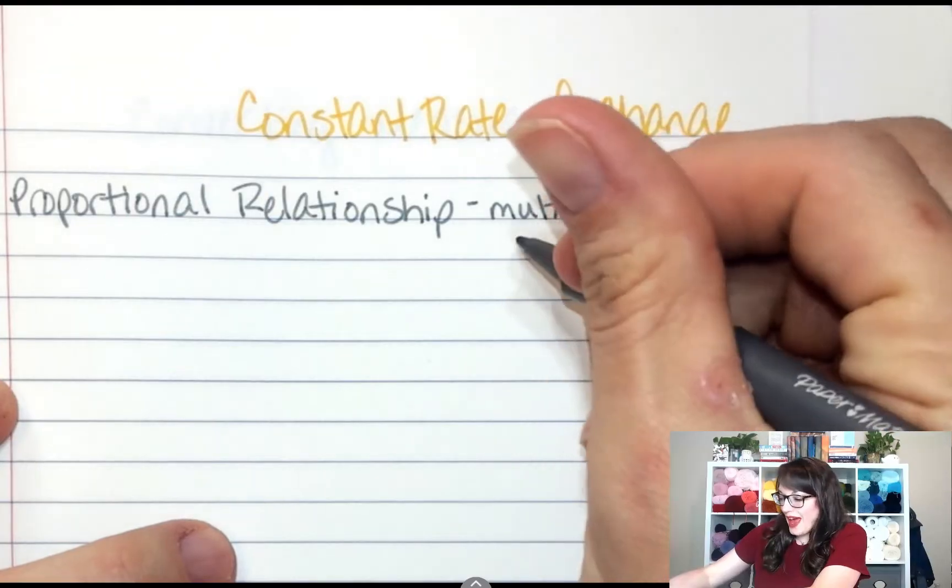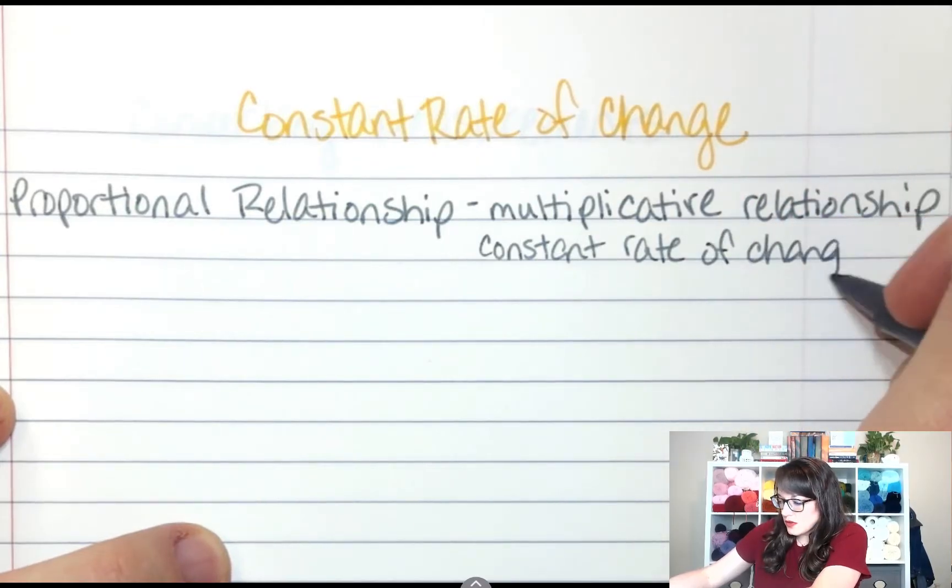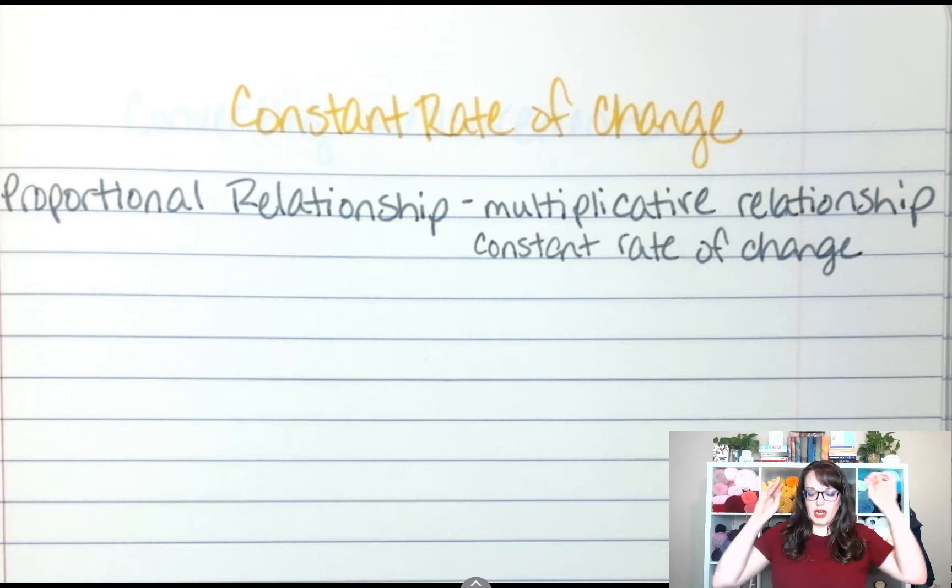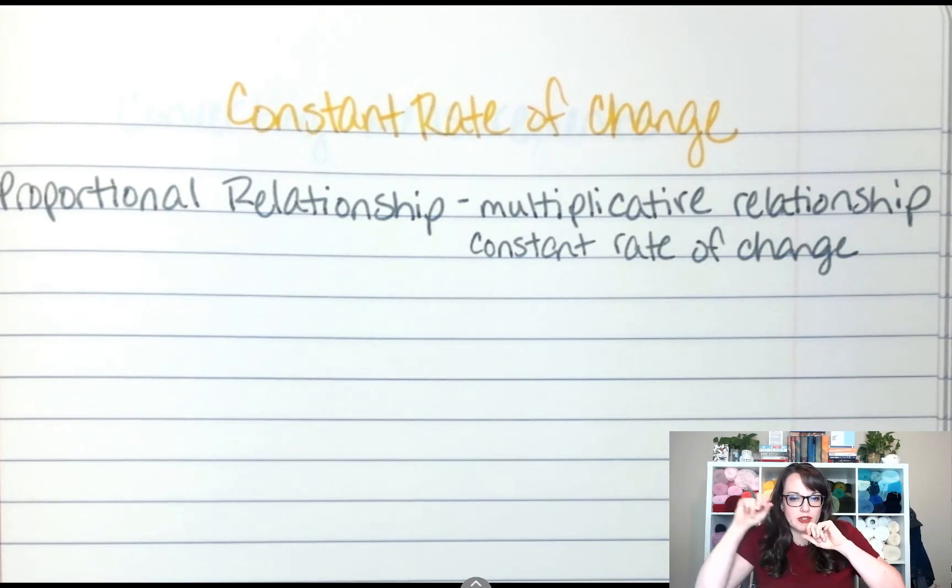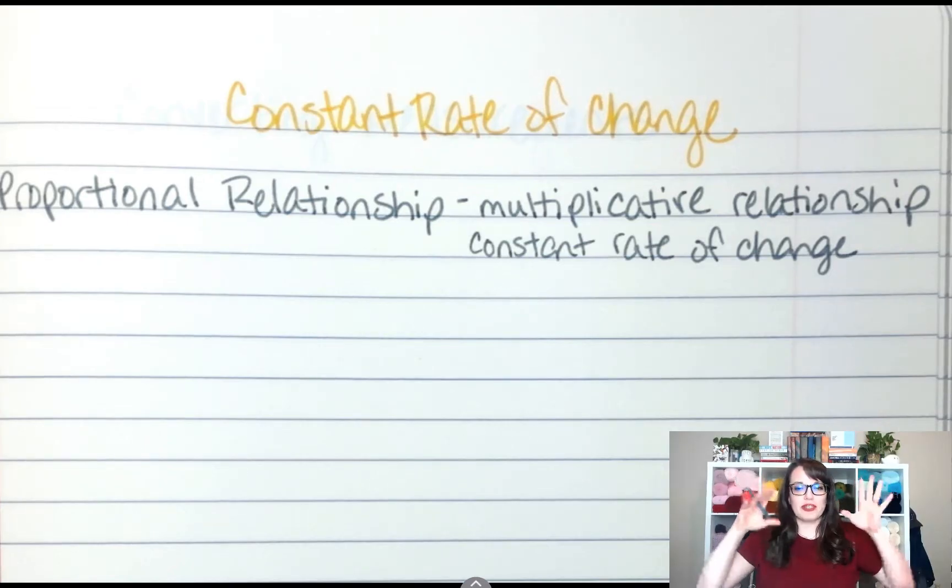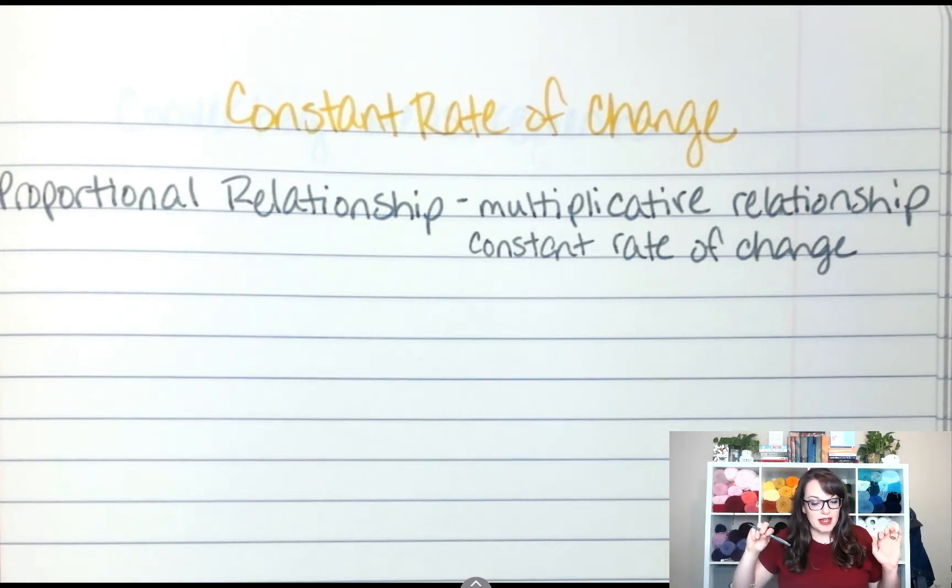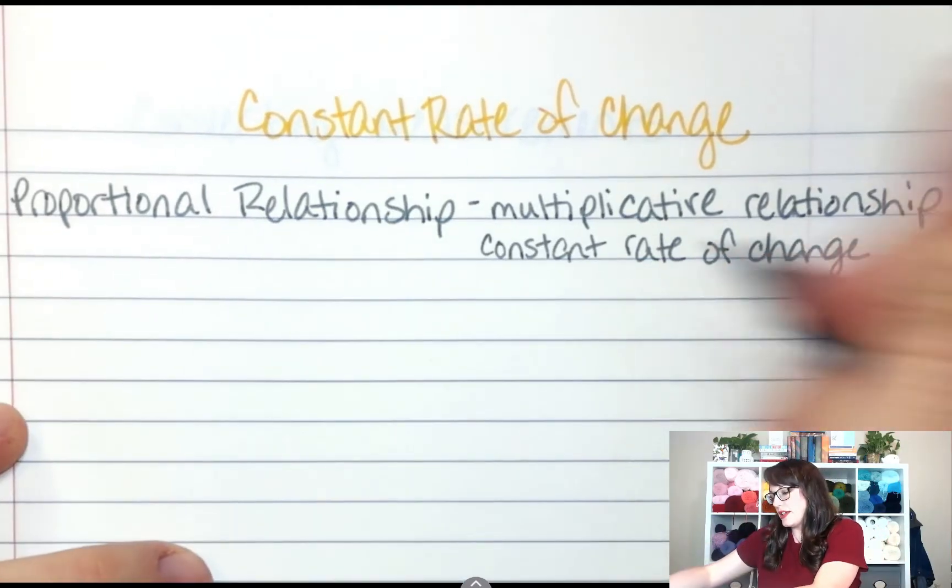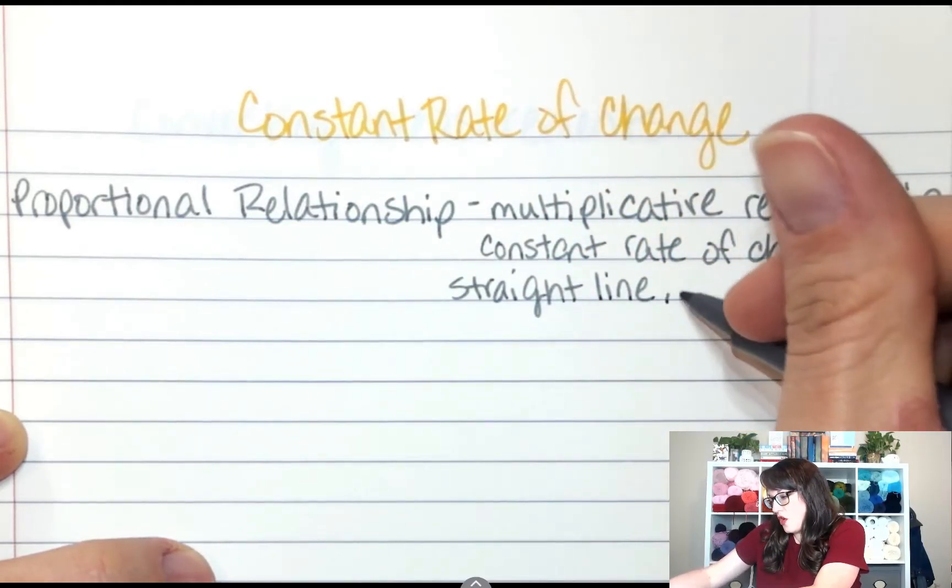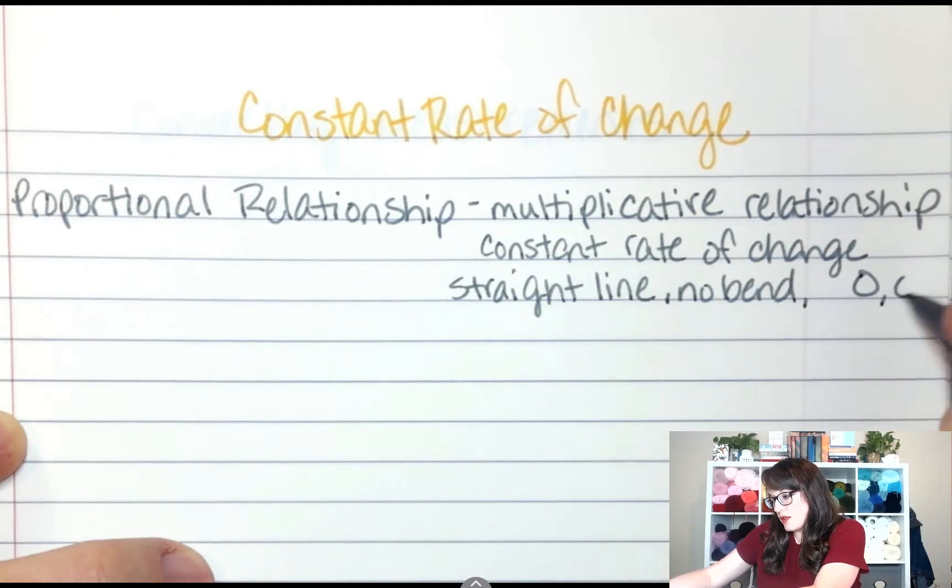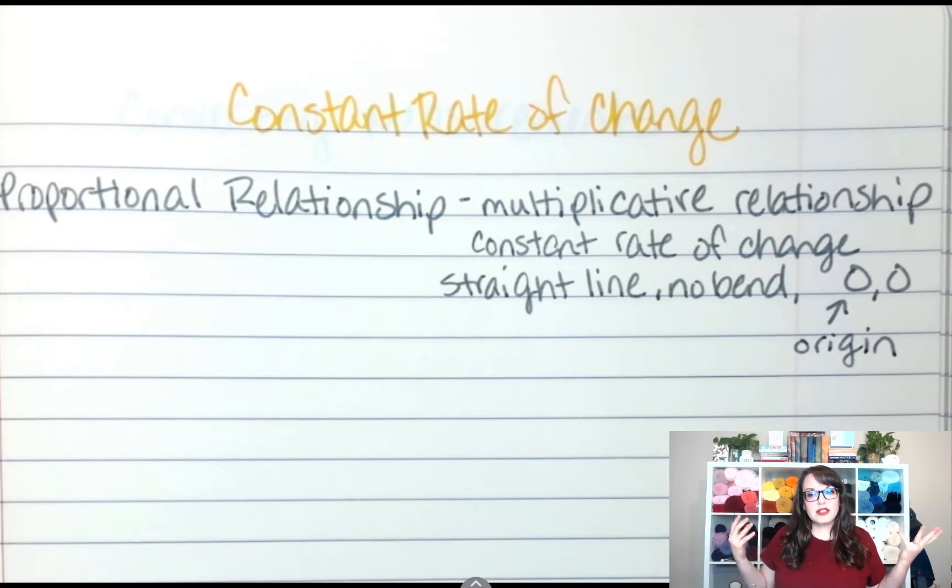So you're going to have a constant rate of change and when you have that constant rate of change imagine you're on a graph and if I'm graphing a constant relationship that graph is going to be a straight line because it's going to be continuous. It's a straight line. It's not going to change. It's not going to bend. And this one has to go through zero zero. So it's a straight line, no bend, and it goes through zero zero. And the zero zero let's not forget this is called the origin.